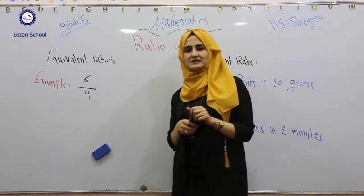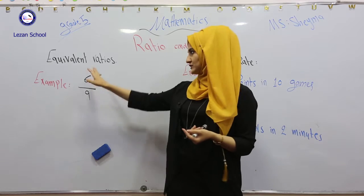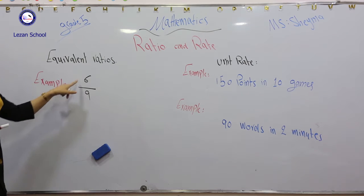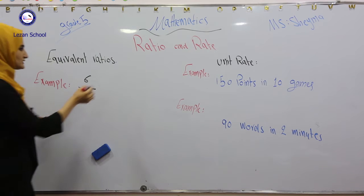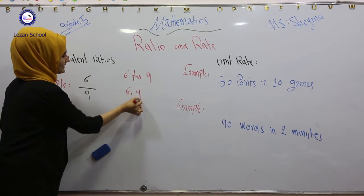What's a ratio, what's a rate? Guys, ratio is basically like a fraction number. It means it's a comparison between two numbers. We have this example 6 over 9. We can write this 6 over 9 in another two types: 6 to 9 or 6 is to 9.